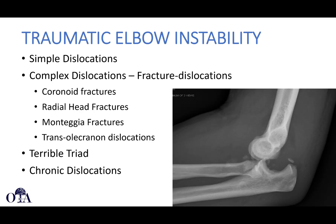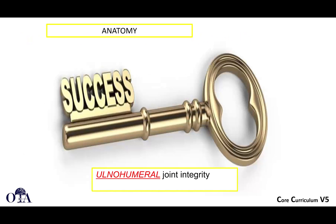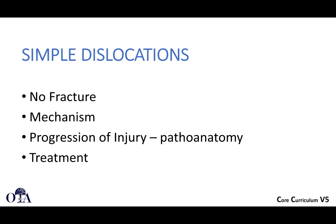Terrible triad refers to elbow dislocation with both radial head and coronoid fractures. There are also chronically dislocated elbows. The key to success is obtaining and maintaining ulnohumeral joint integrity — that is what you are striving for with treatment.